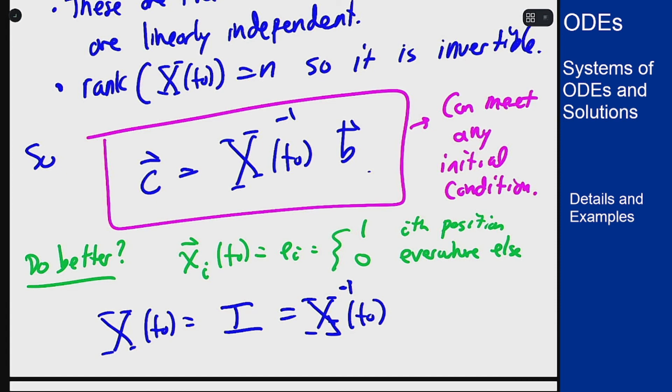It becomes in this case really, really easy to find the constant c's. They are just the initial condition flat out. Whatever value you have for the initial condition, those are the values of the c's you need to meet that initial condition.